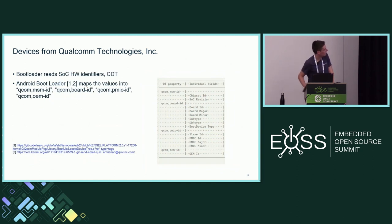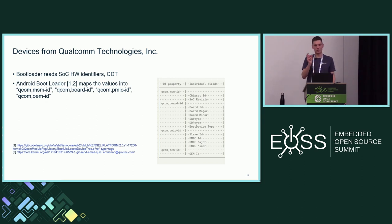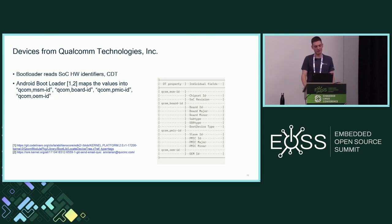Folks familiar with Qualcomm hardware know we have the old MSMID, board ID, and PMICID. The Android bootloader (ABL) reads these identifiers from the CDT and hardware registers and maps them into a bit field called MSMID, board ID, and PMICID. Our bootloaders read all the DTBs, which all have this MSMID in them, and try to match them. They read the SOC hardware identifier register, read the MSMID, and if they both match what's expected, that must be the right DTB. We have a pretty complicated algorithm behind this that isn't all that great, but we're trying to get something common.